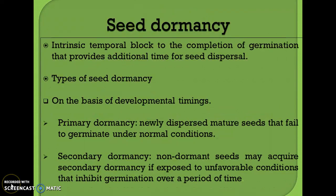Seed dormancy is a period of temporary suspension of the growth of a seed. When a seed matures, dehydration of the embryo occurs and rehydration is needed for germination. Sometimes, even though imbibition of water occurs, the seed may not germinate — there may arise some intrinsic temporal block to the completion of germination that provides additional time for seed dispersal.